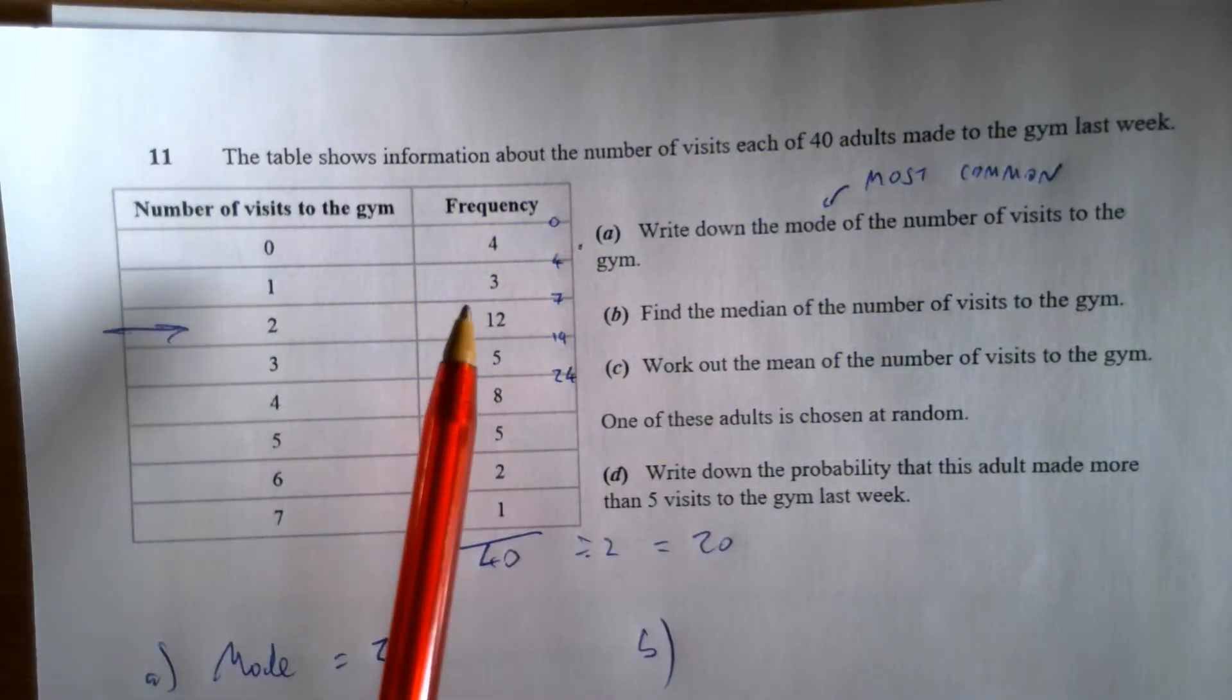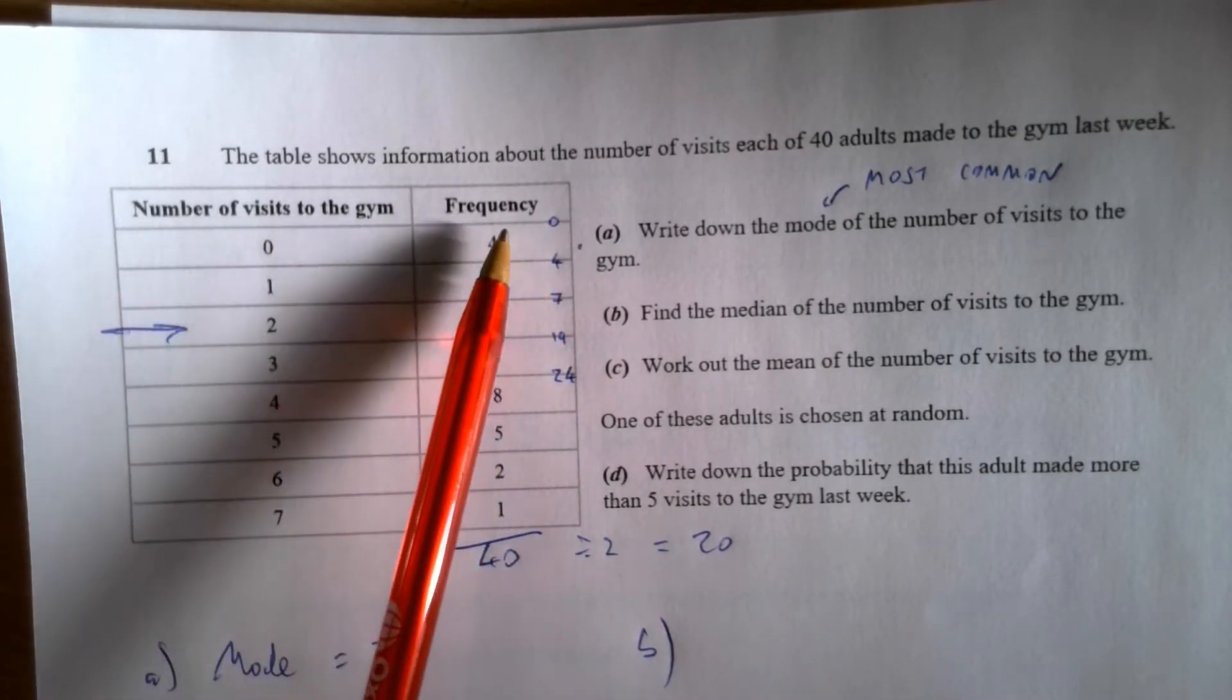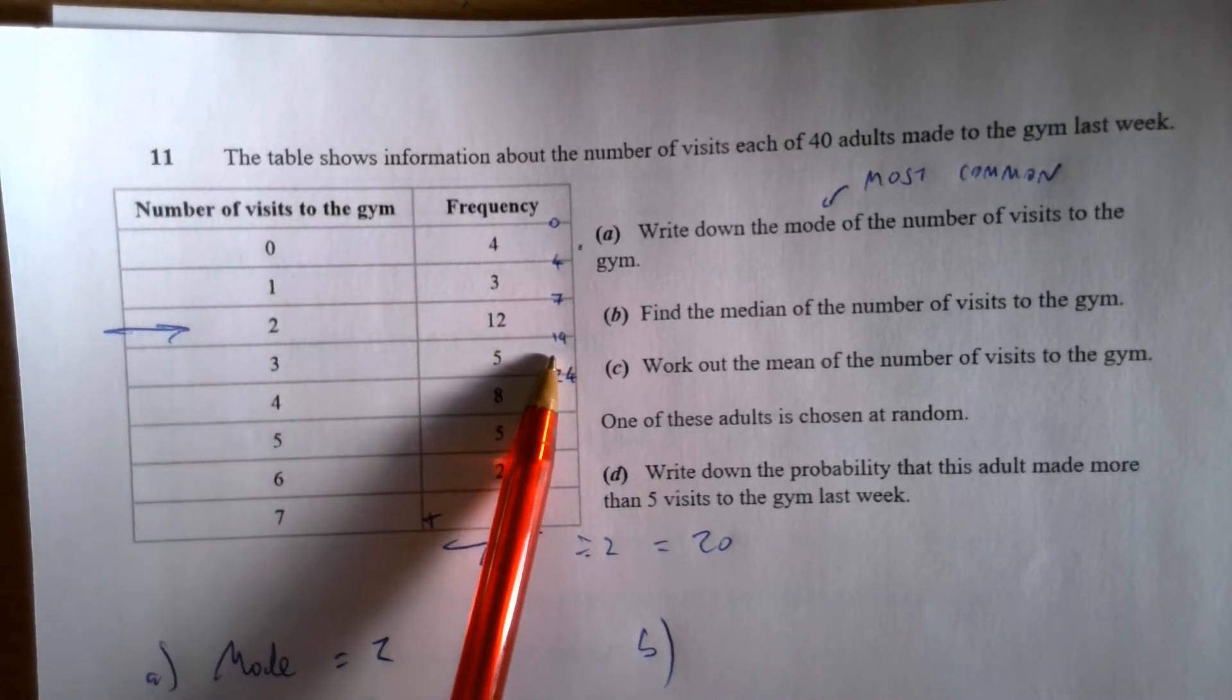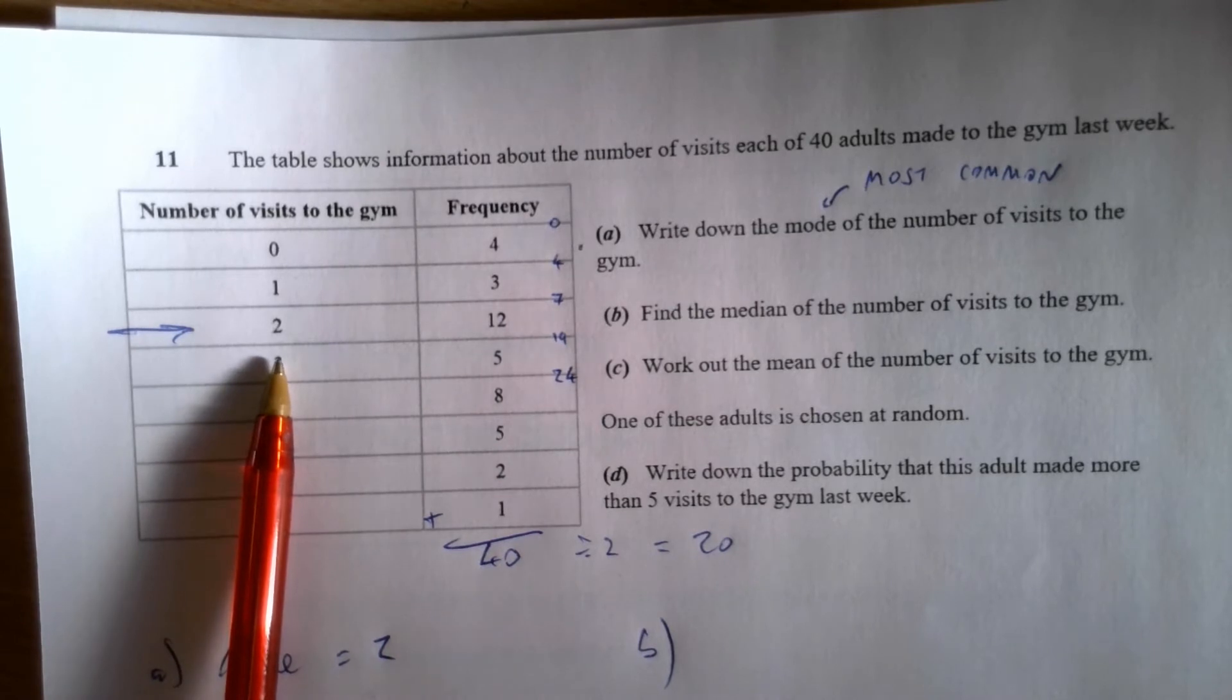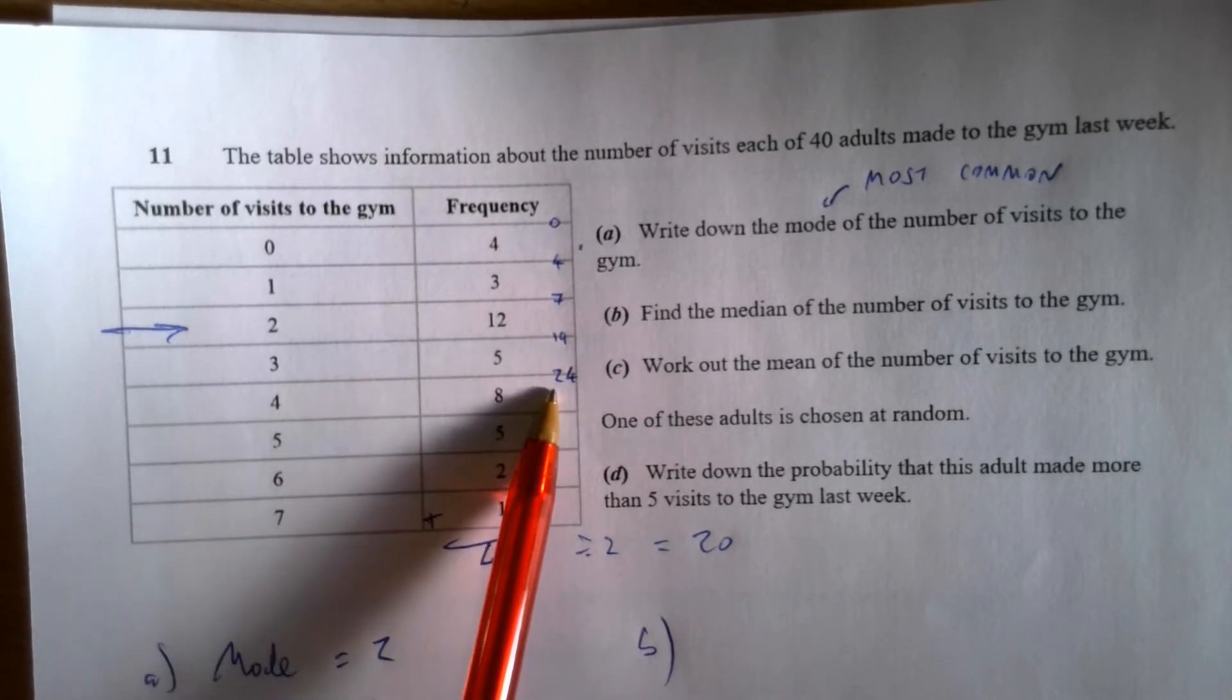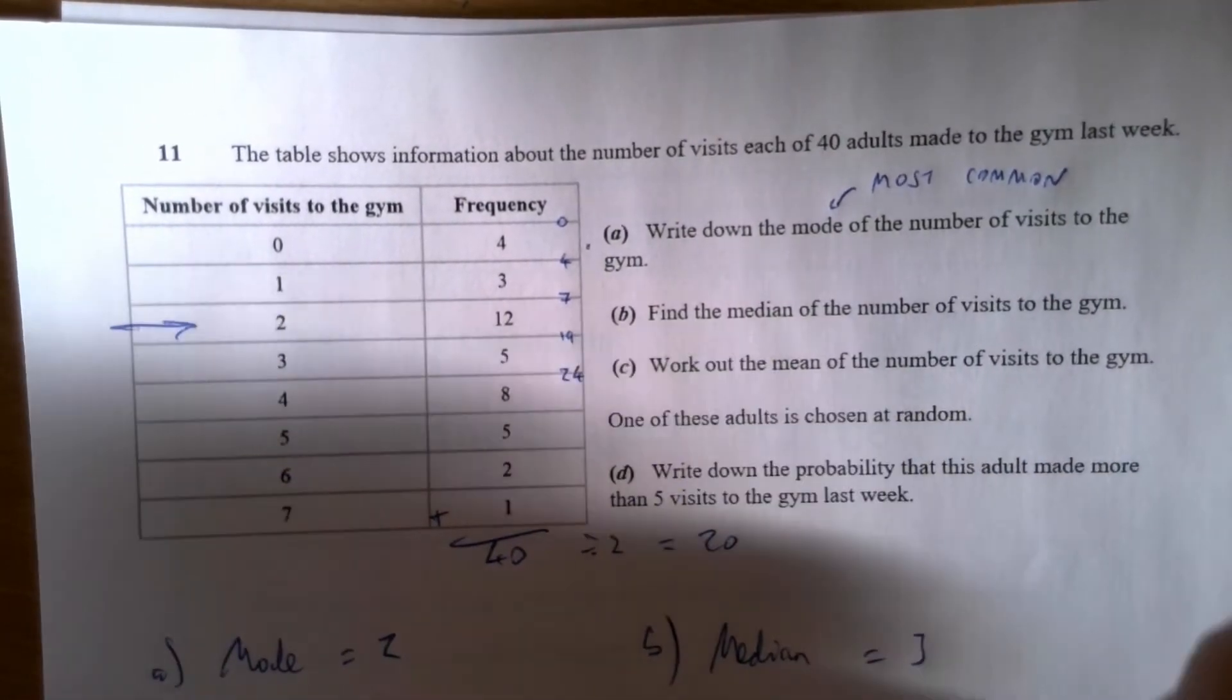If we think about this in terms of a running total of people, I've added some extra numbers here. At the start of this data registry, there was zero people. Four people go zero times, and then I'm up to seven people once I've seen how many went once, 19 people by the time I've checked off all who went twice, and so it continues. The 20th person, therefore, between 19th and 24th, has been to the gym three times. Meaning the median, in this case, is three.